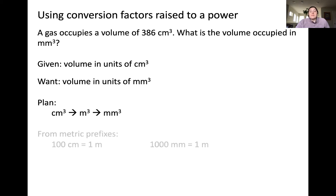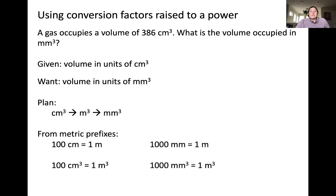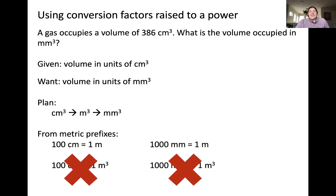Hopefully you remember from the metric prefixes video the equivalency of centimeters and millimeters to meters. Namely, there are 100 centimeters in a meter, and there are 1000 millimeters in a meter. One of the most common mistakes students make when doing this conversion is just cubing the unit — for example, saying 100 centimeters cubed must equal 1 meter cubed, and 1000 millimeters cubed must equal 1 meter cubed. This is incorrect. You cannot simply cube the unit without doing anything to the value in front of the unit.